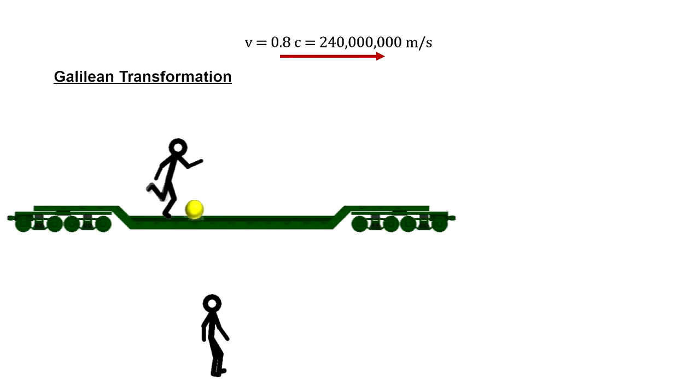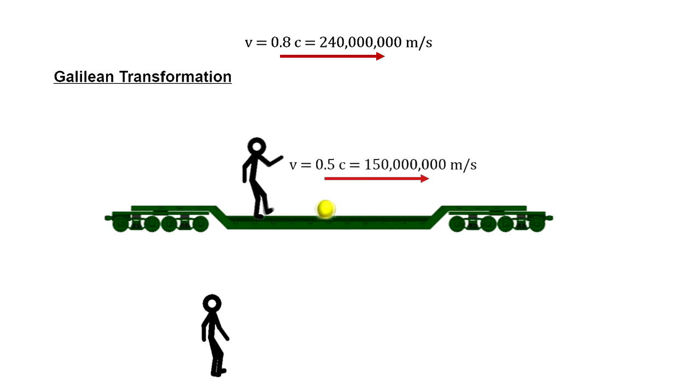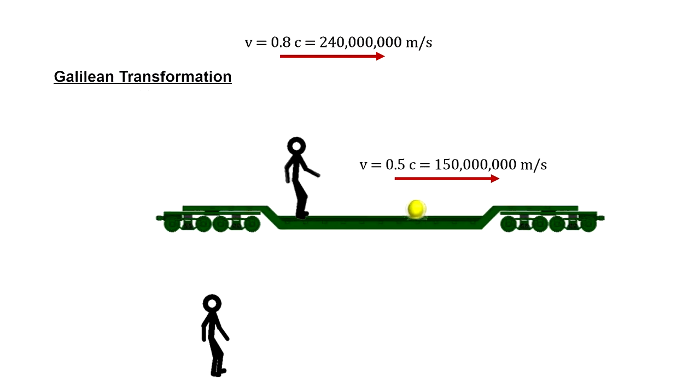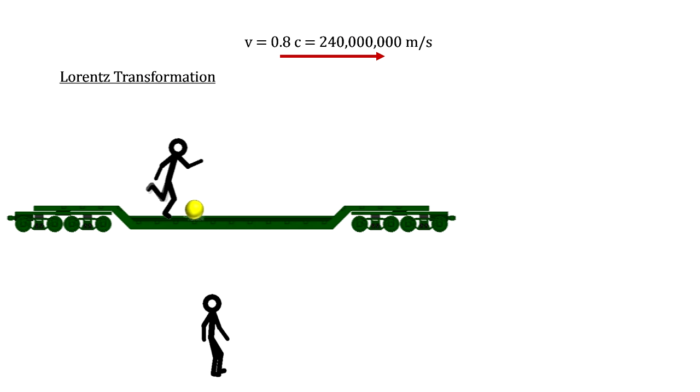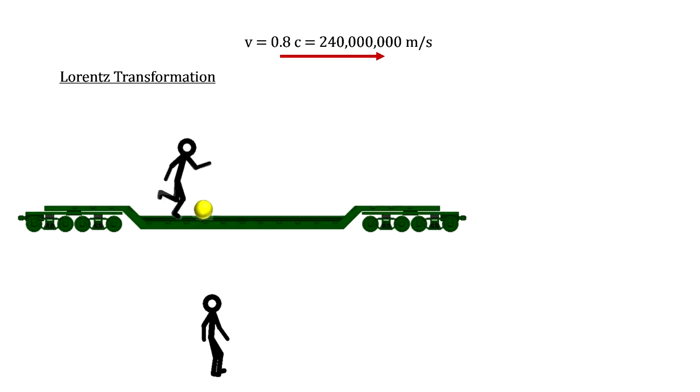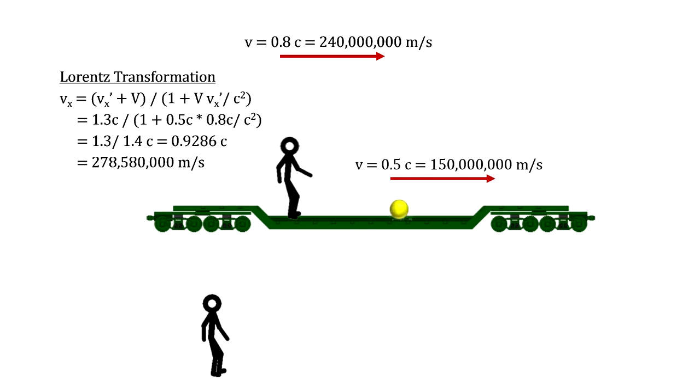Now let's shift the super train into high gear and say its velocity is eight-tenths of the speed of light. And the person on the train kicks the ball at one-half the speed of light. If the Galilean transformations were correct, the person on the ground would add these together and see the ball traveling faster than the speed of light. But to keep the speed of light a constant, the new relativistic equations tell us the person on the ground would see the ball traveling a lot slower than that, at nine-tenths the speed of light.